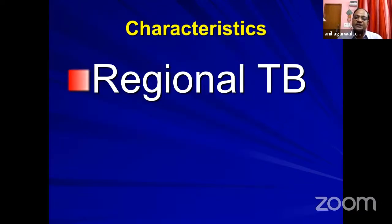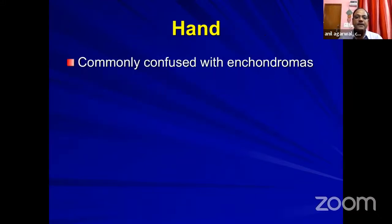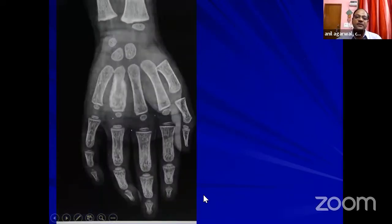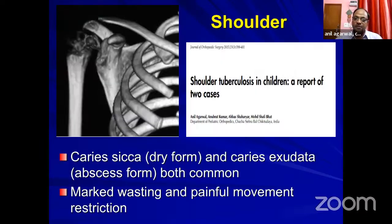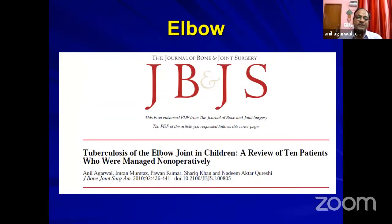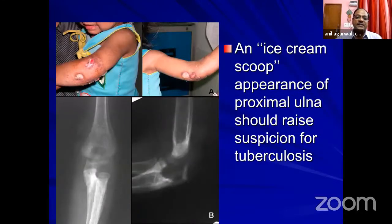Recent tuberculosis cases share very special features. In the hand, TB is commonly confused with enchondromas. Shoulder tuberculosis can present in two forms: dry or exudative. In both, there is marked wasting and painful movement restriction. Elbow tuberculosis — we published a big series on this — shows an ice cream scoop-type appearance in the tubercular elbow. Whenever you see these, please suspect a tuberculosis diagnosis.